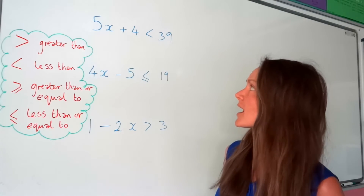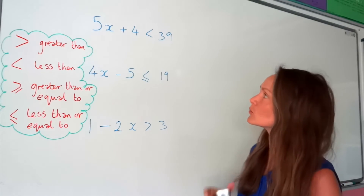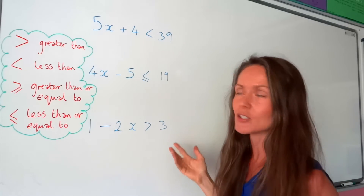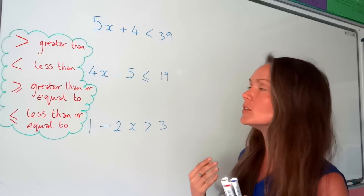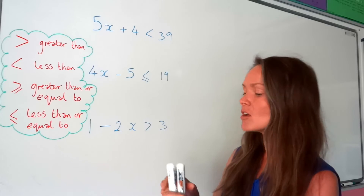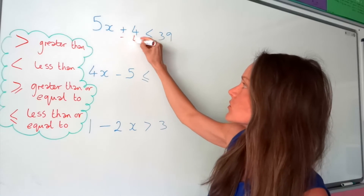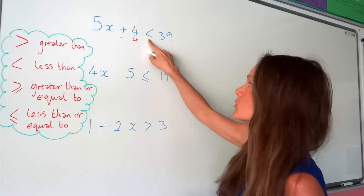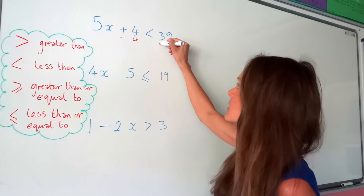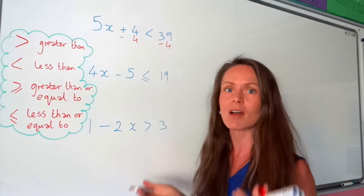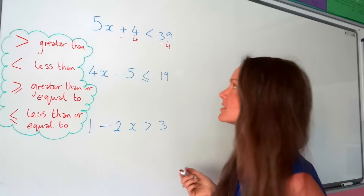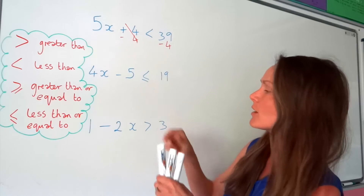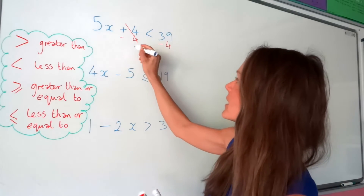Let's get going and have a go at these questions. Just like when you're solving equations, you need to move everything away from the x value until x is by itself — reverse the operations. The opposite of adding 4 is to subtract 4, and if you subtract 4 on the left-hand side, you have to do the same on the right-hand side.